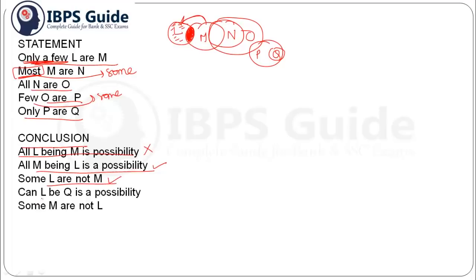Next: 'Can L be Q is a possibility?' No, it is not — because in the statement it said 'only P are Q', so Q will not share any boundary except with P. This case becomes false, and the conclusion becomes wrong. Next: 'Some M are not L.' Can we definitely say that some M are not L? We can't, so this conclusion becomes wrong.